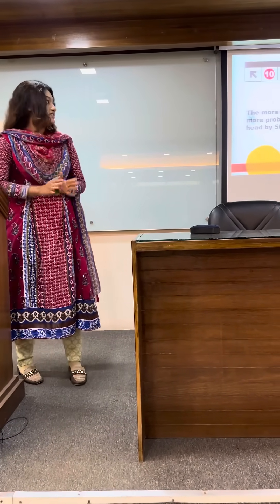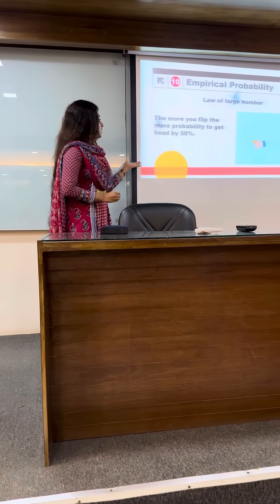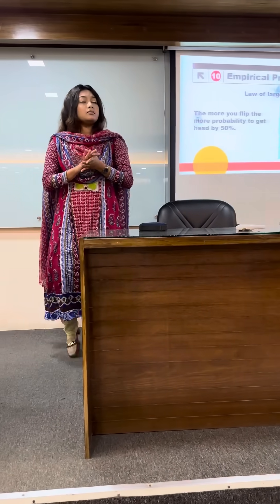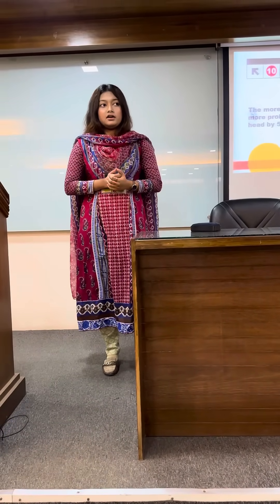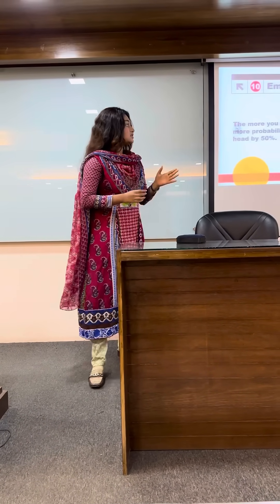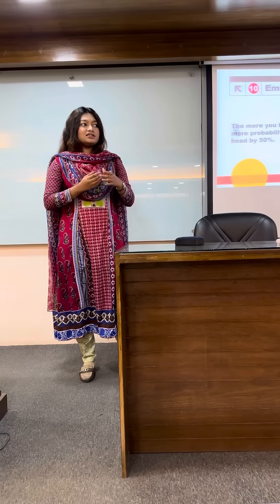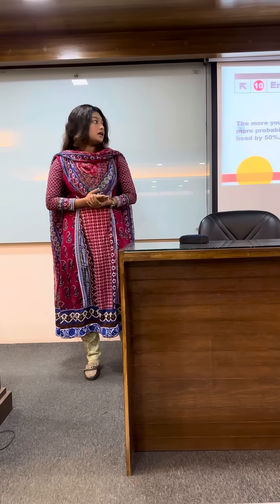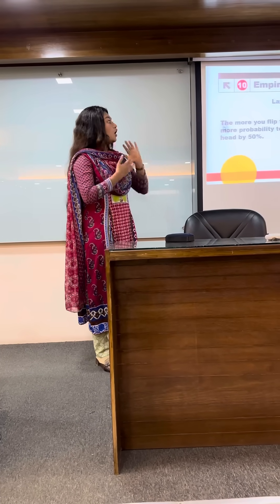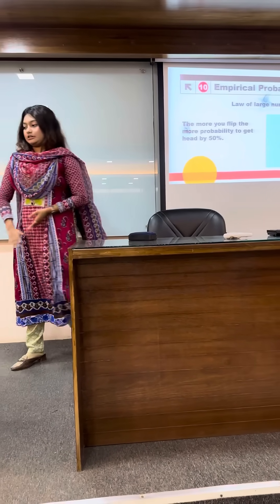Now let's show an example. Here we can see a coin is flipping. When we flip a coin while doing a toss, it's 50-50% probability that it would be heads or it would be tails. This is called the law of large numbers, and it's empirical probability.